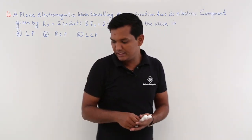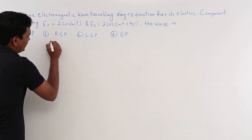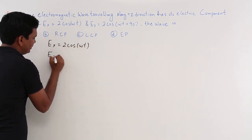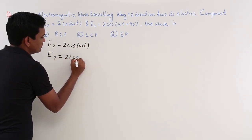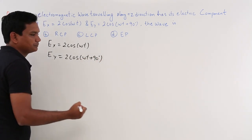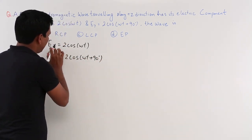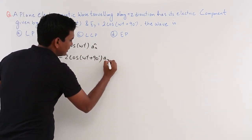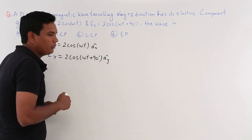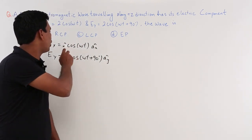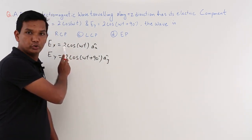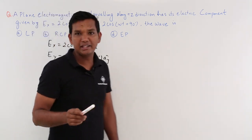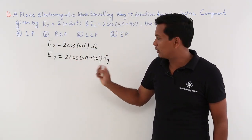We are going to write the Ex and Ey components. Ex is 2cos(ωt) along the x-axis, and Ey is 2cos(ωt + 90°) along the y-axis. The magnitude of the component along the x-axis is 2, and the magnitude along the y-axis is also 2, so the magnitudes in both directions are equal.